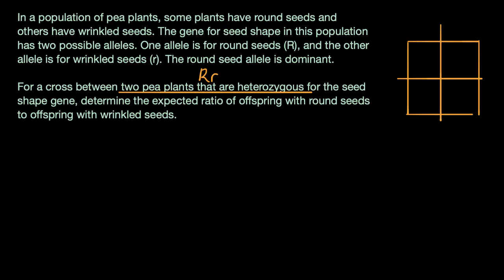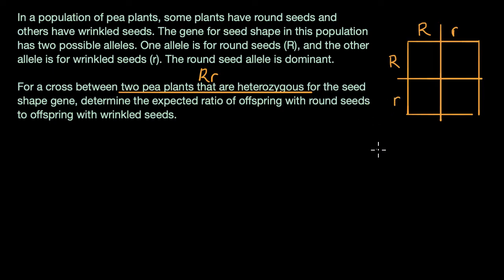So you have your two parents, and each parent is capital R, lowercase r. That means parent one can contribute the capital R to the offspring, or it could contribute the lowercase r allele to the offspring. And the same thing could happen for the other parent — it could contribute capital R, or it could contribute lowercase r. So what are all of the equally likely possibilities for the offspring?